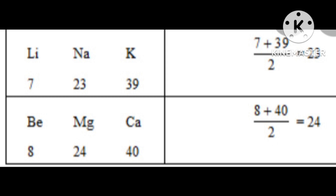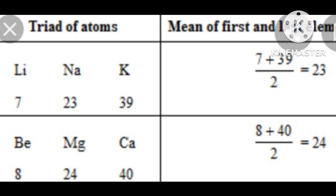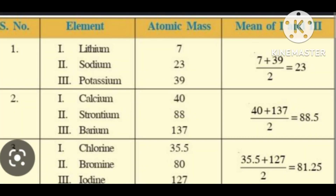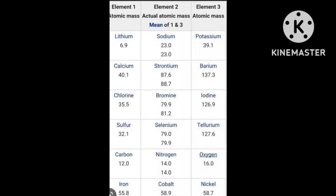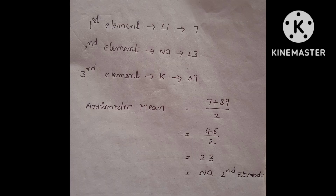For example, in the alkali metal group: lithium is the first element, sodium is the middle element, and potassium is the third element of the triad. The arithmetic mean of the atomic masses of the first and third elements would be approximately equal to the atomic mass of the second element. Lithium has mass 7, potassium has mass 39, and their average is 23.